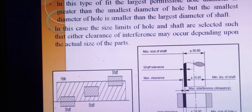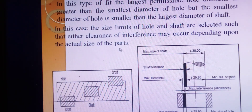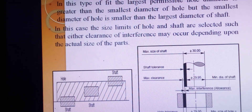The third type is transition fit. In this type of fit, the largest permissible hole diameter is greater than the smallest diameter of the shaft, but the smallest diameter of the hole is smaller than the largest diameter of the shaft. The size limits of the hole and shaft are selected such that either clearance or interference may occur depending on the actual sizes of the parts. We call it transition fit because both conditions are possible.